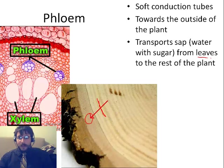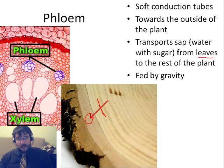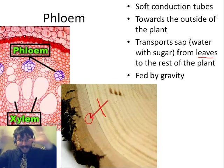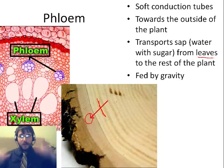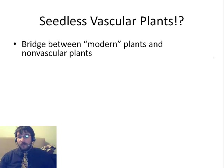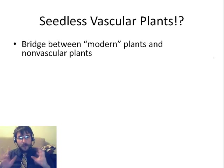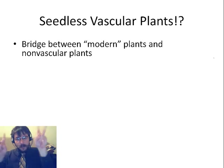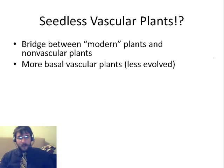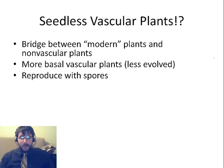Phloem moves from the leaves down to the rest of the plant — shoots to roots. It's fed by gravity. The leaves are up here doing photosynthesis, so the sugar generated gets sent down to the rest of the plant, like the roots. This is our transition group between non-vascular plants and what we consider modern plants. They're more basal, meaning they're not quite as modified by evolution.